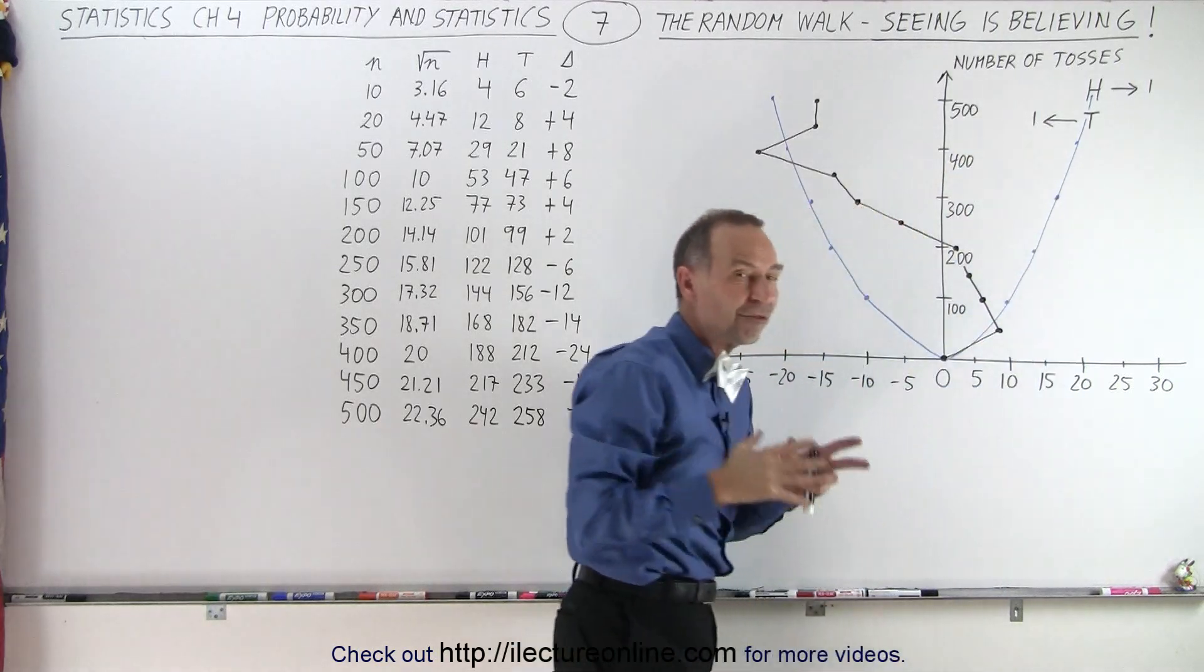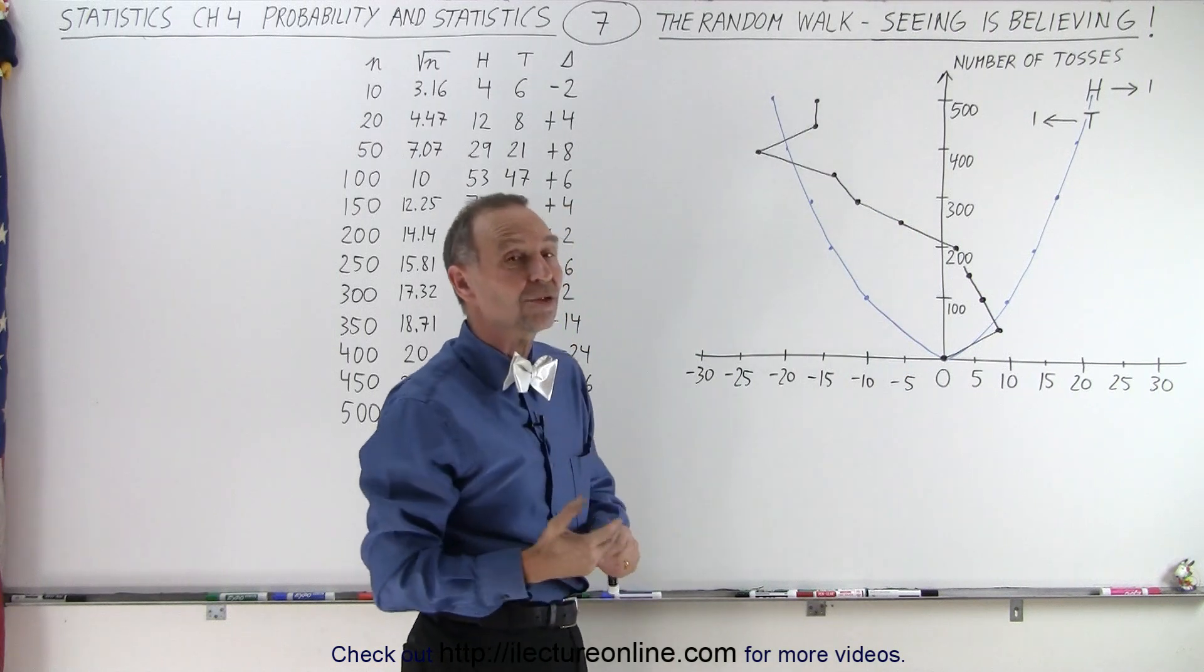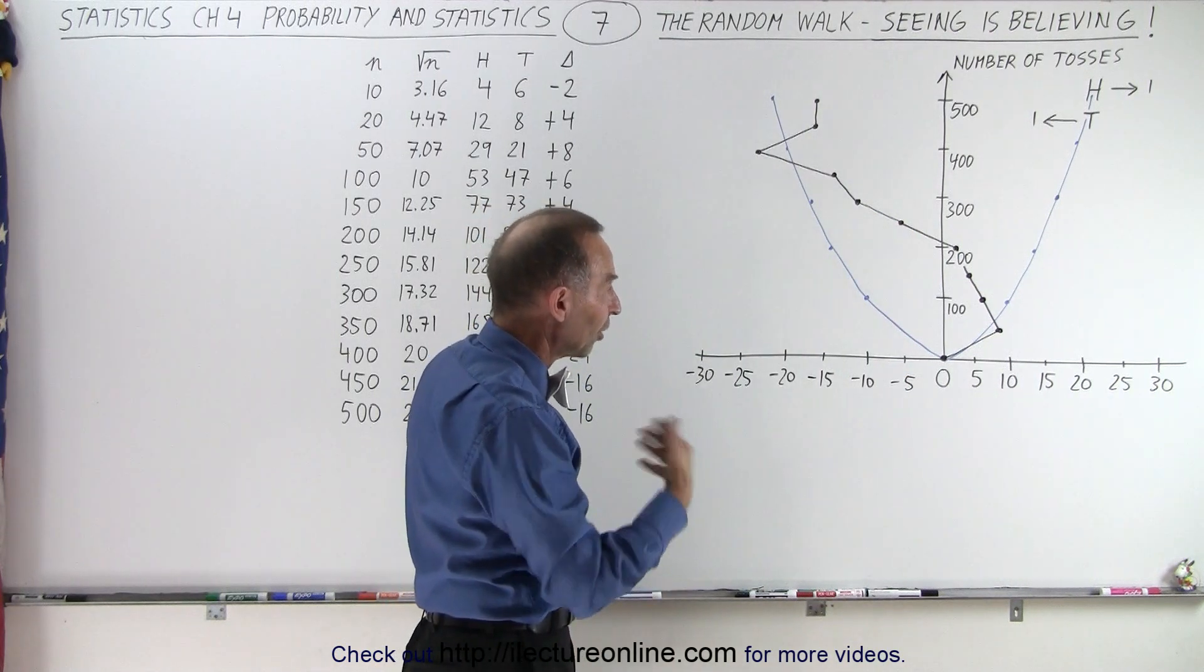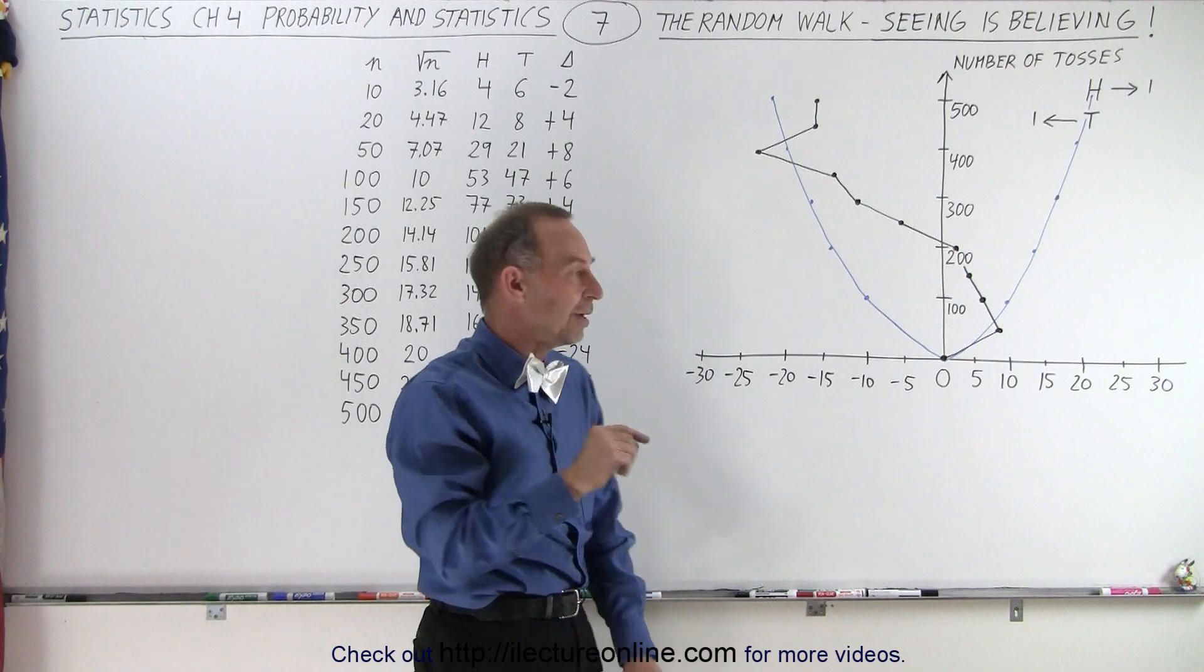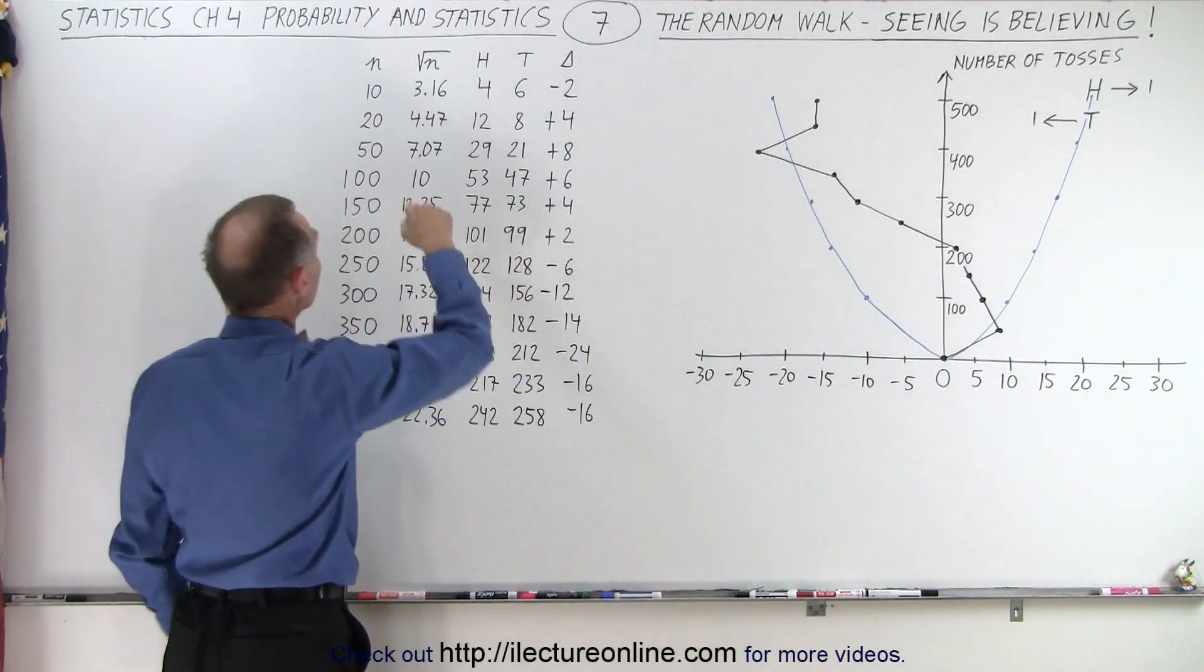So it would seem like it would be farther and farther away from the origin the more times you toss the coin. So I started tossing it. Of course, we don't have an exact accounting of all 500, I started grouping it.